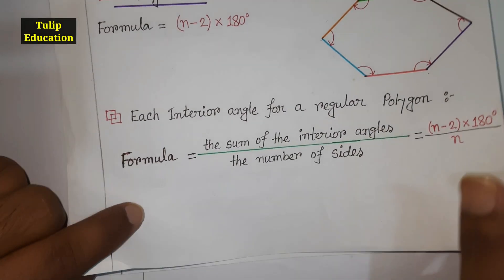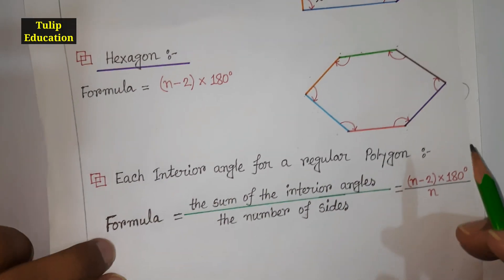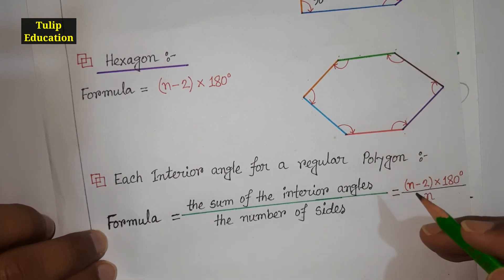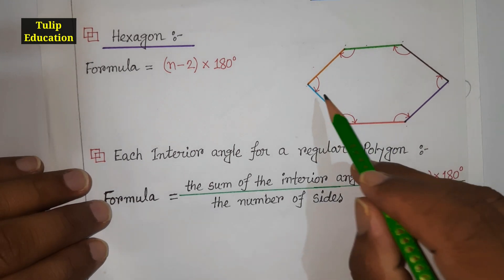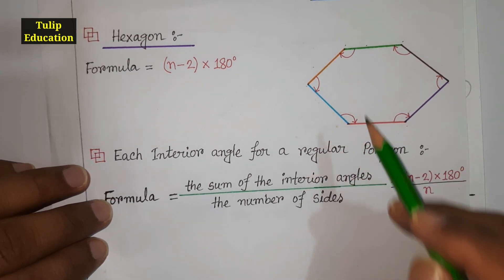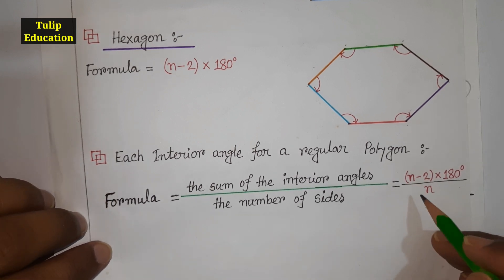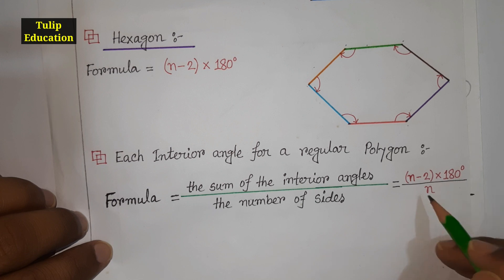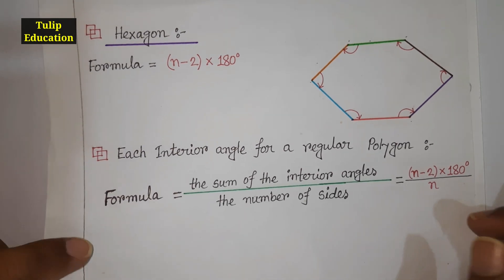In our previous tutorial I discussed how to find the interior angle of a regular polygon. This regular hexagon uses the formula: (n − 2) × 180° ÷ n, where n is the number of sides.